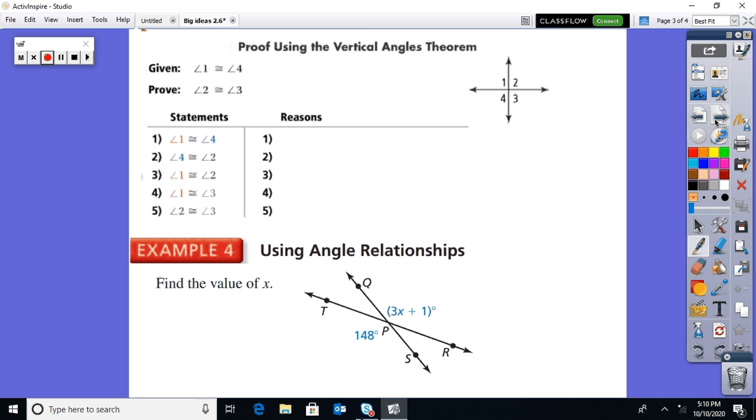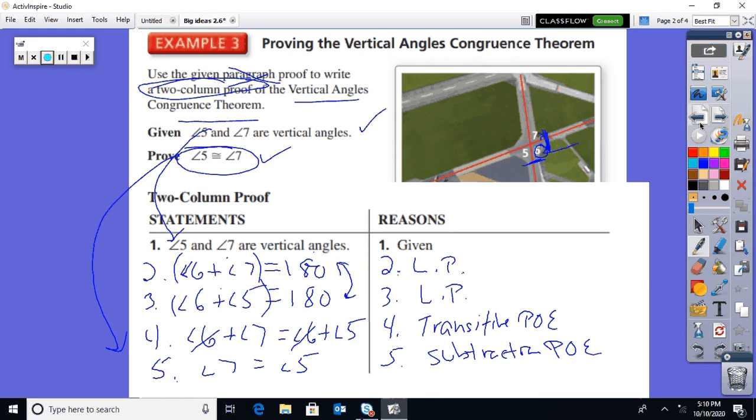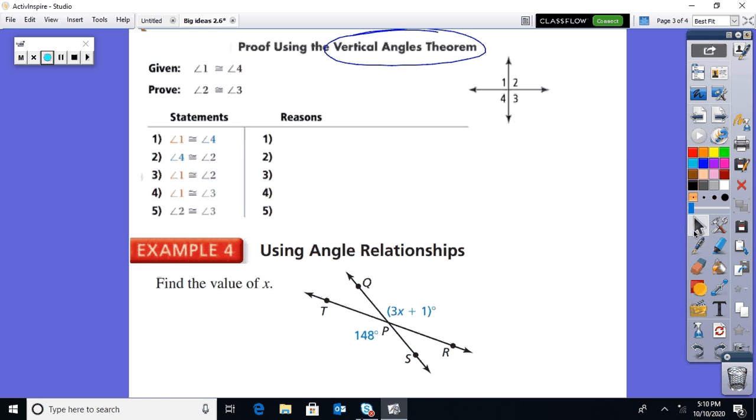Now that we know it, we can use it. You can't use the theorem to prove itself. Like on this last one, you couldn't be like, prove 5 is the same as 6 because they're vertical. No, you're trying to show that. So let's see what we got here. First step, always given. In this crossroads they're telling us that angle 1 is the same as 4. And they're saying if that's the case, then angle 2 should be the same as 3. Can we show that?